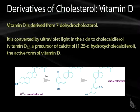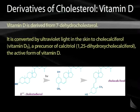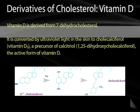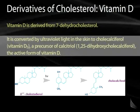Another derivative of cholesterol is vitamin D, derived from 7-dehydrocholesterol — the next-to-last precursor in cholesterol formation. As 7-dehydrocholesterol circulates, it is exposed to ultraviolet light in the skin, which breaks bonds to form cholecalciferol, or vitamin D3. Vitamin D3 is a precursor of calcitriol, which is the active form of vitamin D.